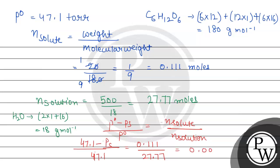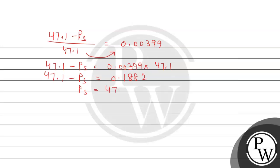This gives us 0.00399. Let us solve further. We have 47.1 minus PS divided by 47.1 equals 0.00399. By multiplication, 47.1 minus PS equals 47.1 times 0.00399, and this multiplication gives 0.1882.